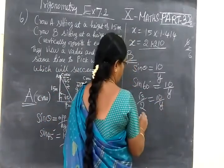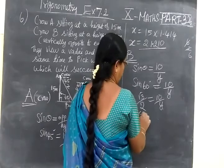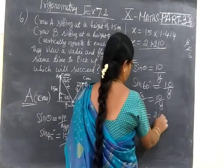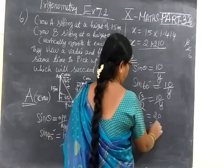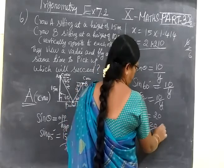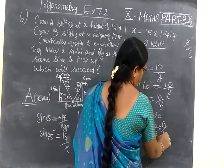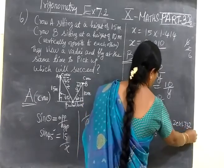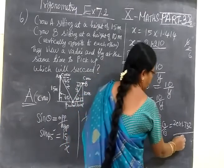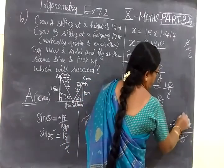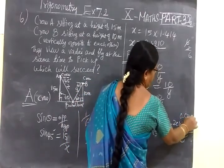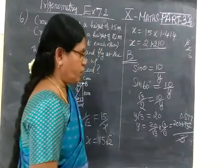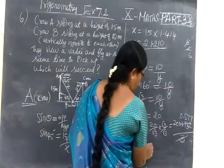Sin 60 equals 10 by Y. Now cross multiply. Y root 3 equals 20. So Y equals 20 by root 3. Here also into root 3 by root 3, so 20 into 1.732 by root 3 into root 3 equals 3.